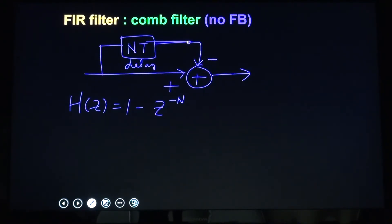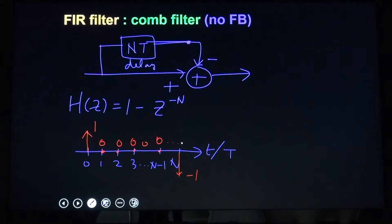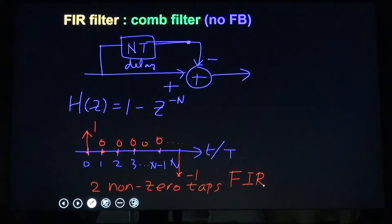The impulse response of this comb filter: at T=0 it is +1, at T=N it is −1, and all other values are 0. So it has only two nonzero taps — it is a finite impulse response, i.e., FIR. There are two feedforward paths and no feedback, confirming this is FIR. This is called the comb filter.